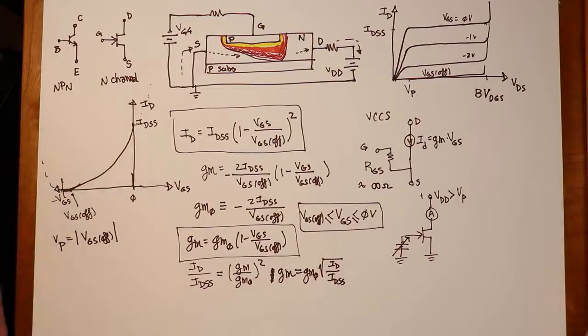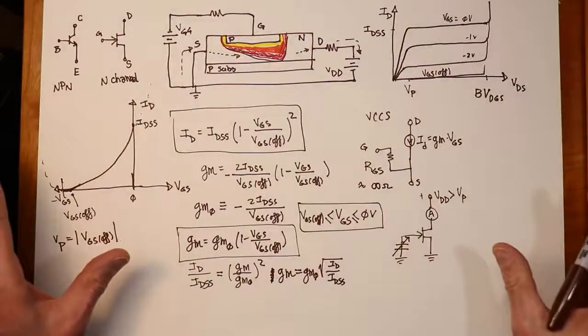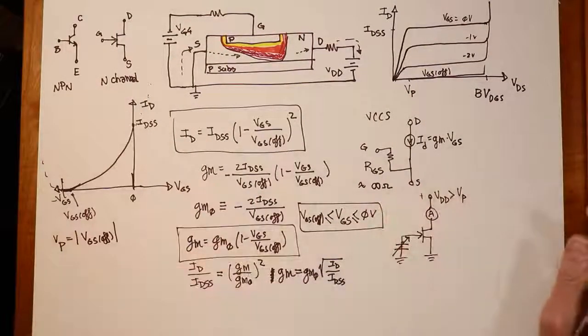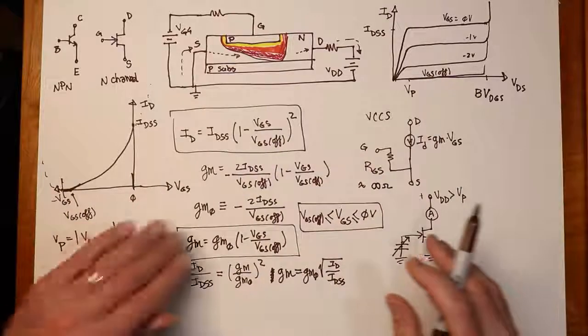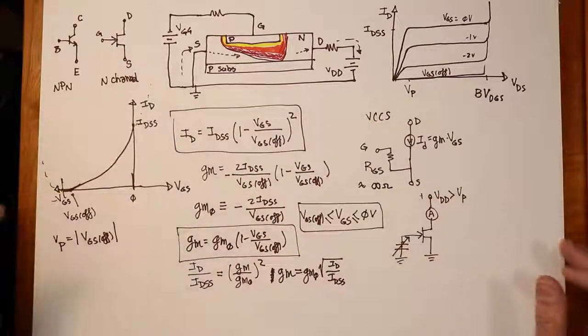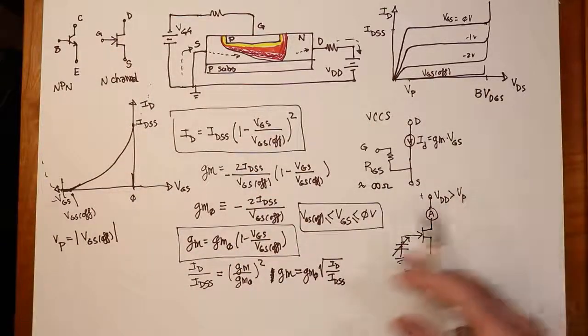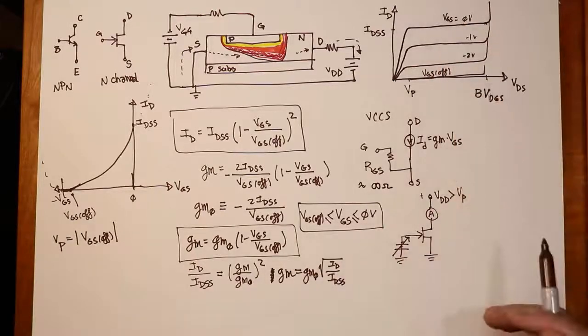Okay, so next time we are going to look at some ways of biasing this device. There's different ways of doing that, just like there are with our bipolars. Approaches are a little bit different, but we are going to make use of these equations. We're going to make use of, you know, these kinds of curves and other curves. And then, we'll work our way into some AC amplification applications as well.